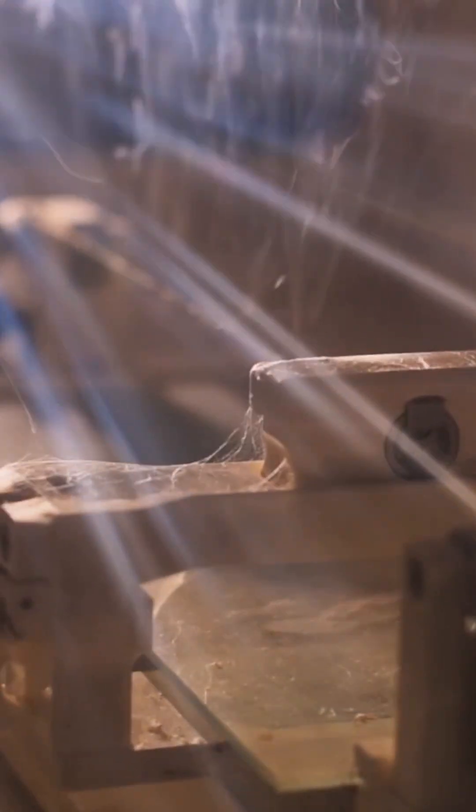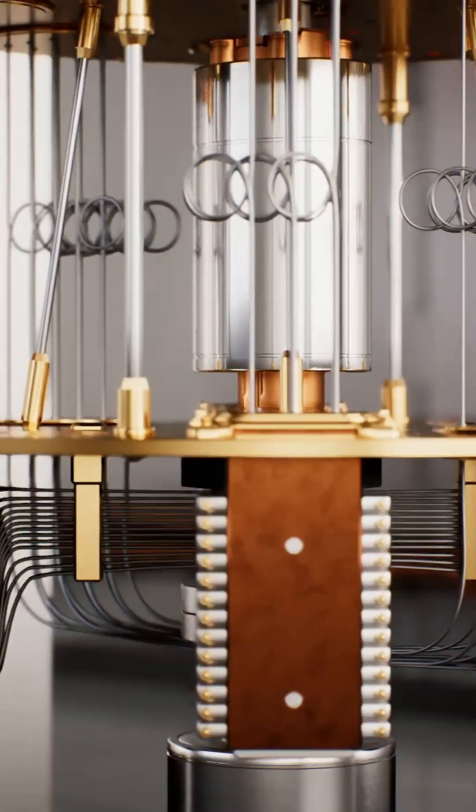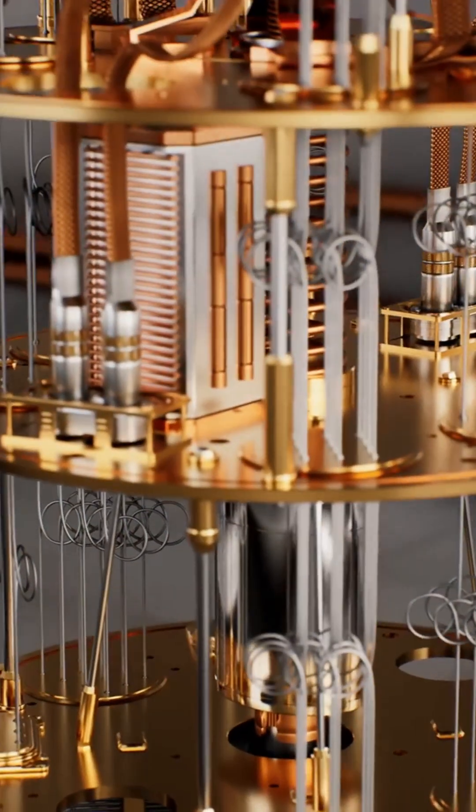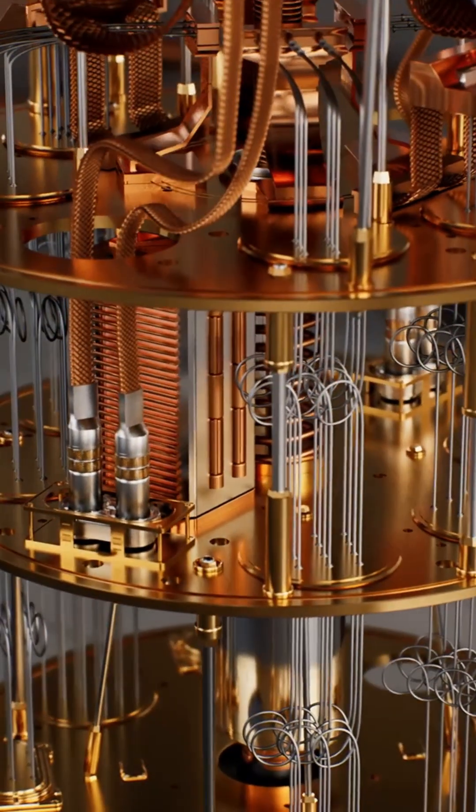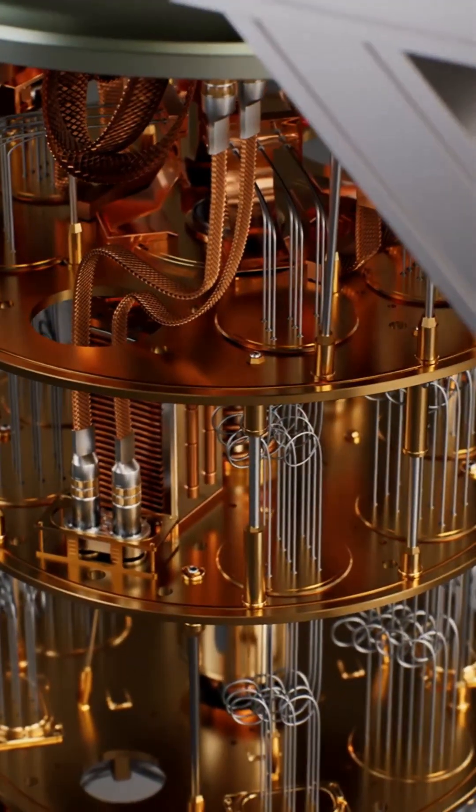This exotic matter isn't something you can pick up at your local hardware store. It requires advanced scientific equipment and a deep understanding of quantum mechanics. Start by harnessing a quantum vacuum fluctuation using a Casimir effect apparatus. This phenomenon, which involves the attraction between two uncharged parallel plates in a vacuum, can generate the negative energy needed for your time machine.